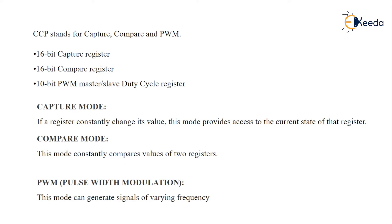Capture mode is basically used with the Timer 1 register. In compare mode, this mode constantly compares the values of two registers; one of those registers is the Timer 1 register (TMR1). When a predetermined amount of timer expires, this circuit also allows the user to trigger an external event and establish an interrupt or timer interrupt.